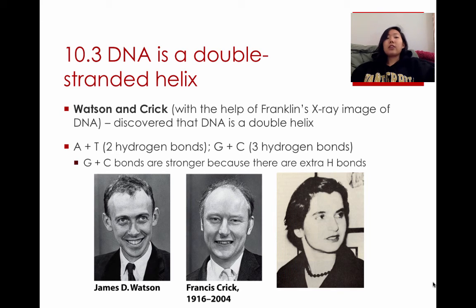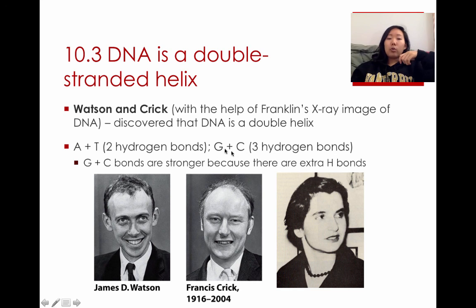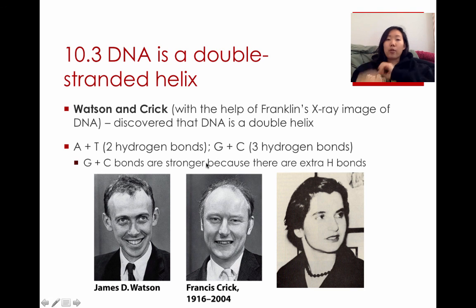Discovering the double-stranded helix shape of DNA is attributed to Watson and Crick, and Rosalind Franklin really helped them discover it with her X-ray images of DNA. They discovered that DNA is a double helix — a swirly shape where the two phosphate backbones intertwine, like a ladder that's twisted. Adenine and thymine always link together, and guanine and cytosine pair together. Adenine and thymine have two hydrogen bonds, whereas guanine and cytosine have three hydrogen bonds, making G-C a stronger base pair.